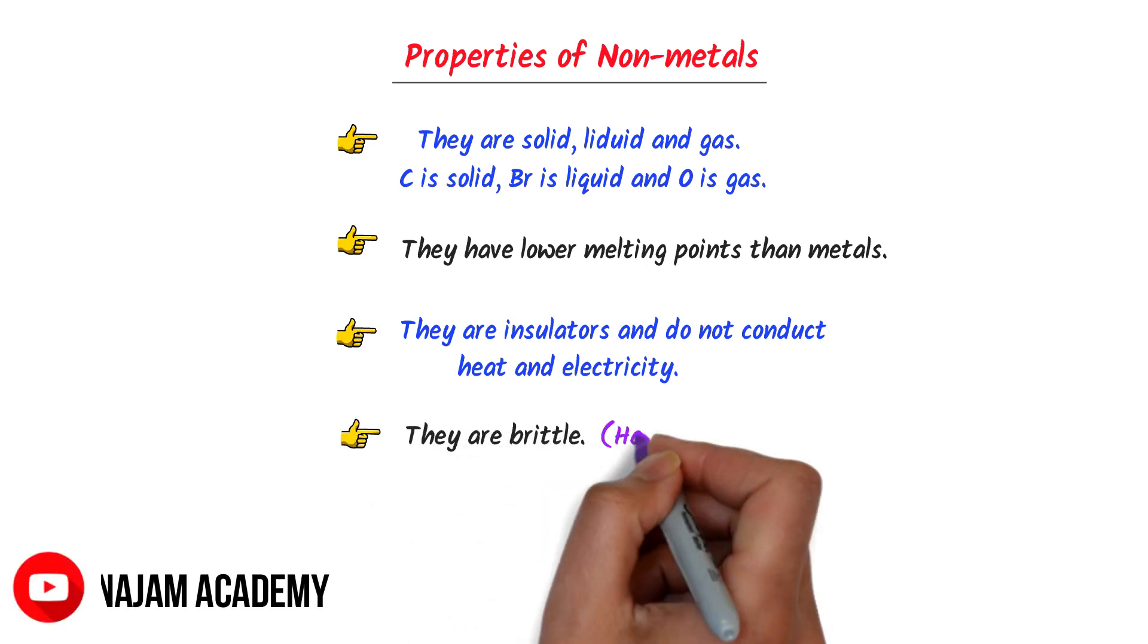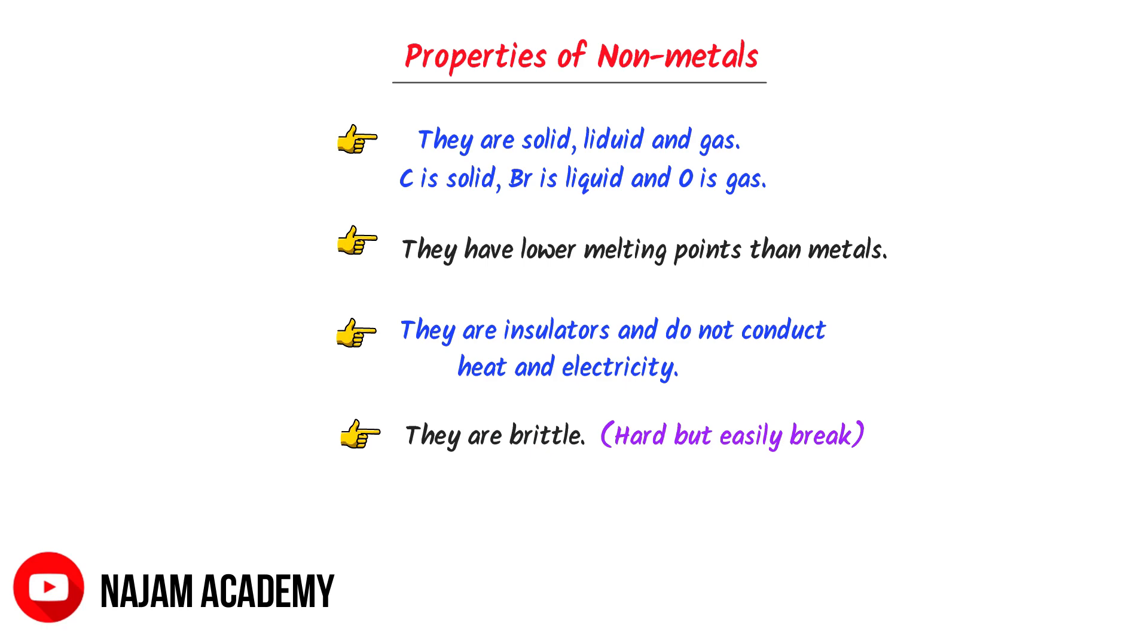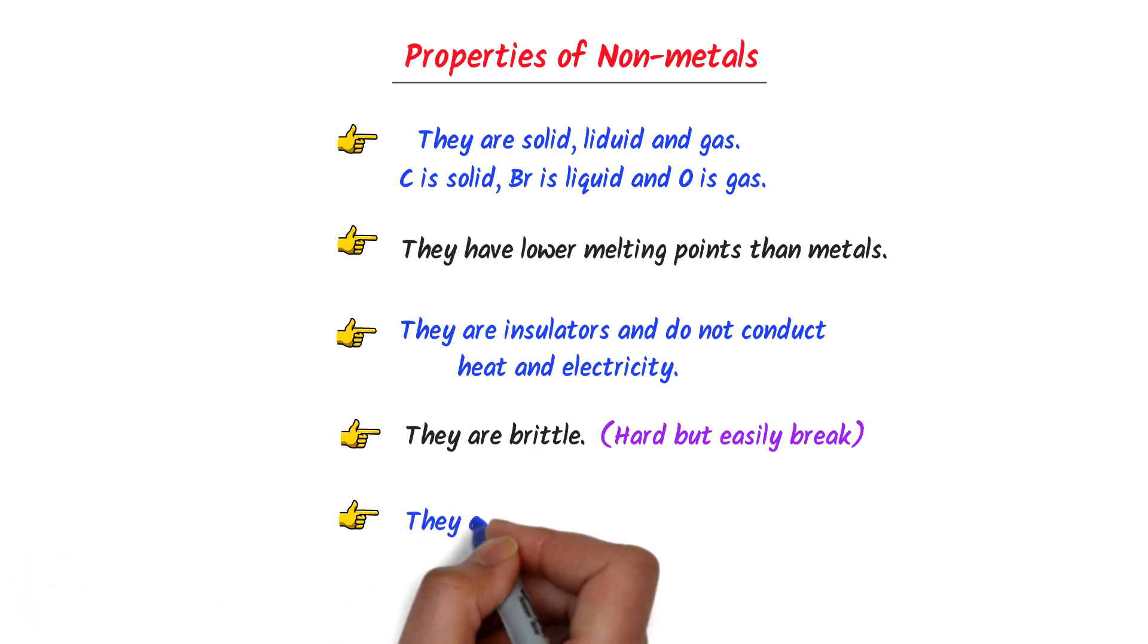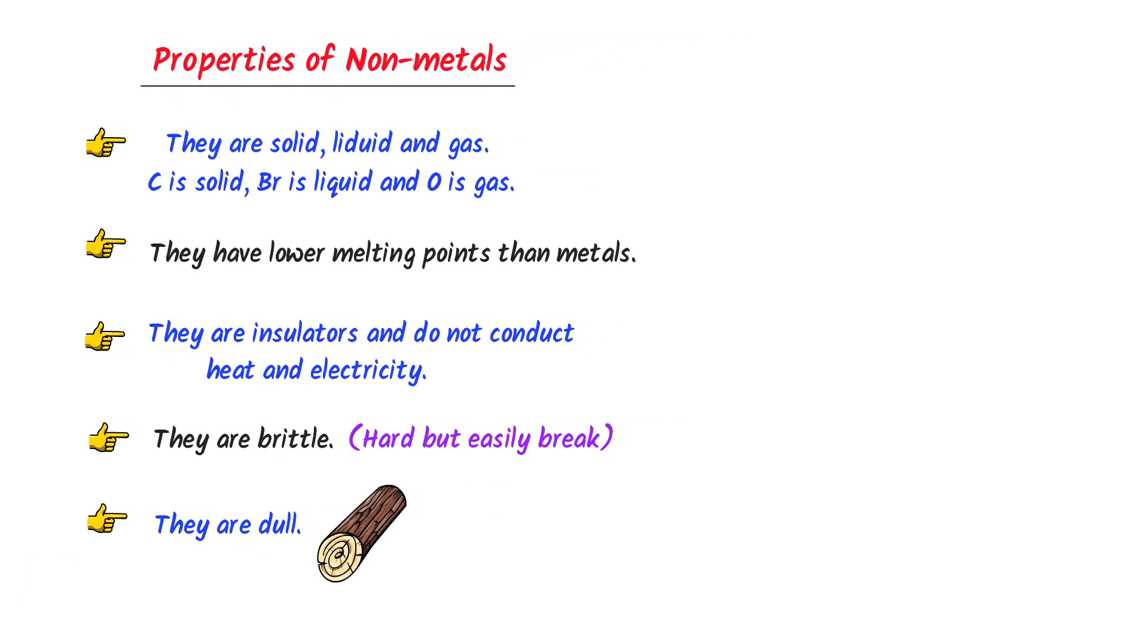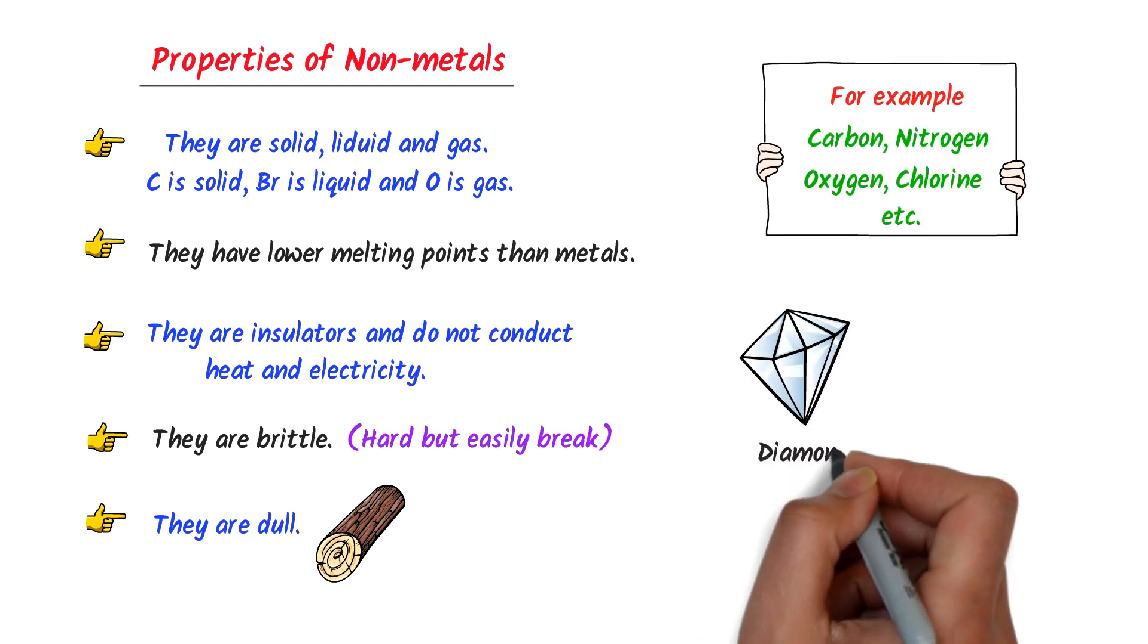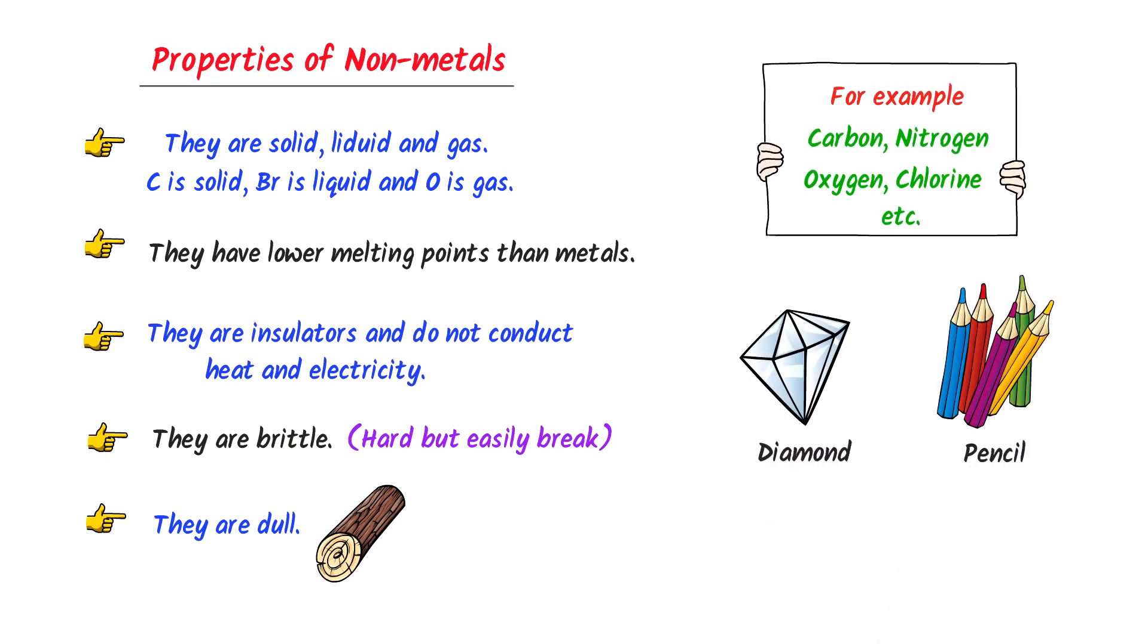Fourthly, they are brittle or they can easily be shattered. Fifthly, they are dull. In our daily life, diamond, pencil, water, etc. are all made up of nonmetals. So these are the basic properties of nonmetals.